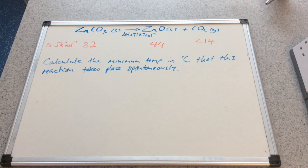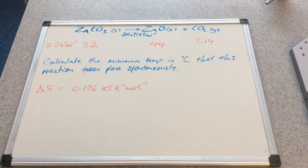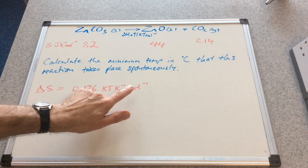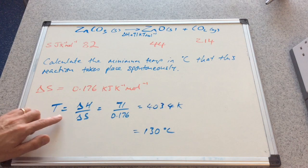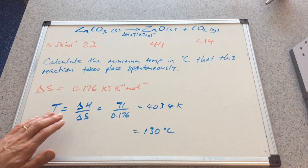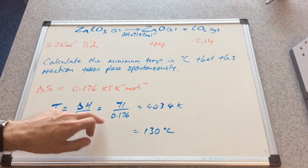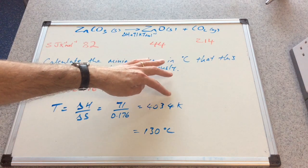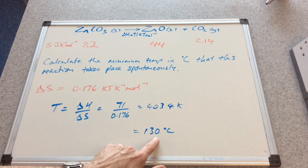So pause the video, work out the answer and then we'll quickly go through it. Using SPAR we get delta S coming out as 0.176 kilojoules per kelvin per mole. If we feed those numbers in to T equals delta H divided by delta S, that's the rearranged Gibbs equation with delta G equal to zero, we get 71 divided by 0.176. In kelvin we have 403.4. Minus 273 gives us 130 degrees C.